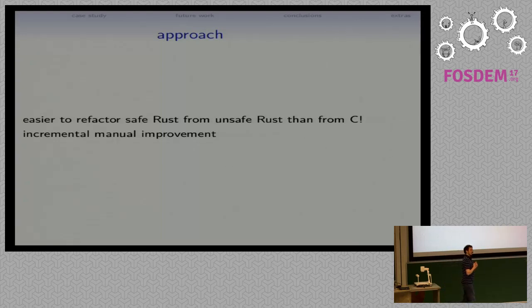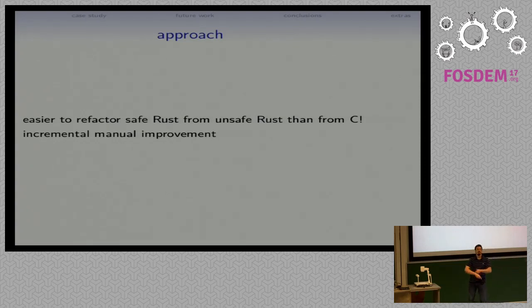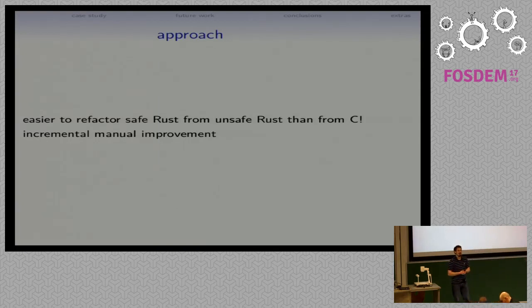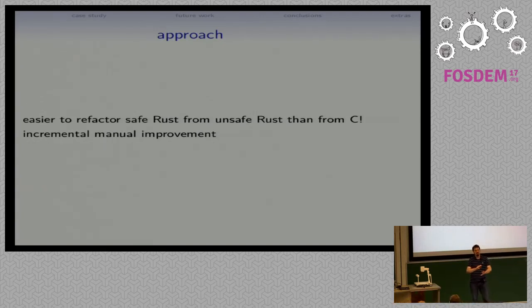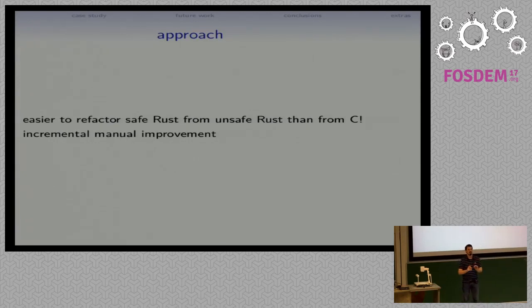A key part of the idea here — the reason why I don't feel it's a problem that Corrode doesn't try to do anything clever about making code more safe than the original — is that it is easier to refactor safe Rust from unsafe Rust than it is to refactor safe Rust from C. If you've got a tool that does a lot of the work for you, all that's left is to take this unsafe Rust and clean it up, make it idiomatic Rust, make it use safe borrows and all these other things.